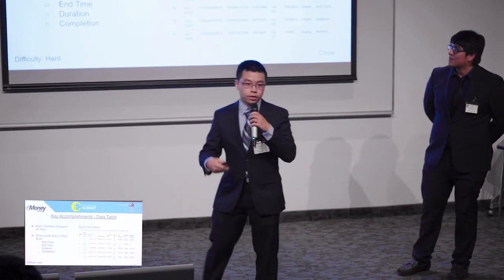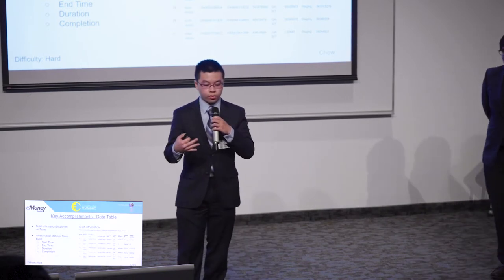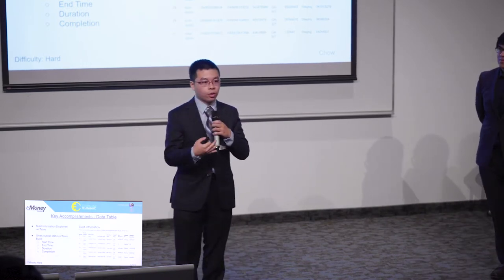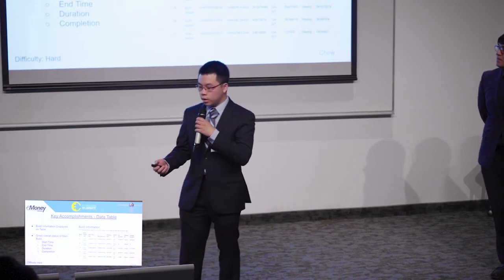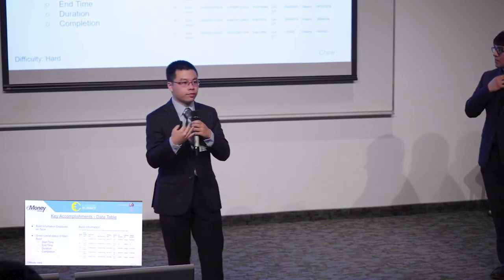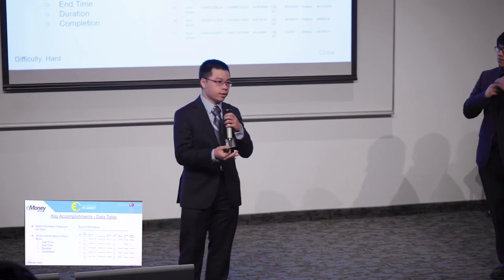Now I'll go over our key accomplishments. To start, I'll cover the data table. Our web application has two tabs — fetch data and Gantt chart. If you click on fetch data, it sends an API call to our server, which requests and retrieves data so that it can be displayed on our data table.